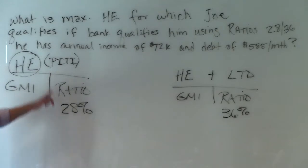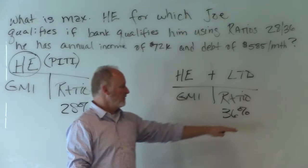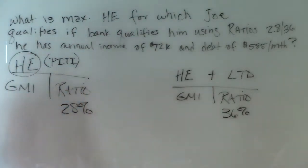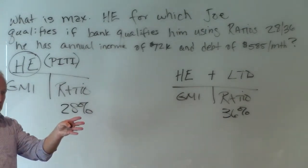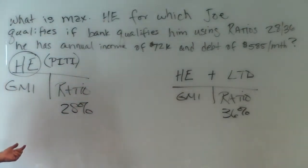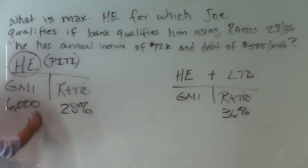Let's look at what we have. The bank qualifies using 28/36 — plug it in. His annual income is $72,000. Since it's annual, what are you going to have to do? Divide by 12. So if it's annual of $72,000, divide by 12 — that's going to be $6,000. Gross monthly income of $6,000.